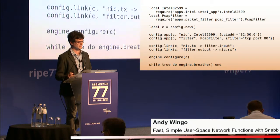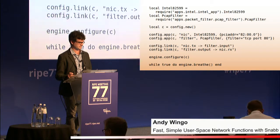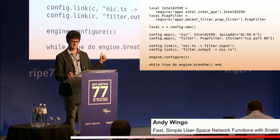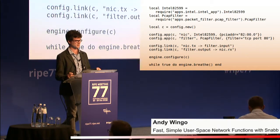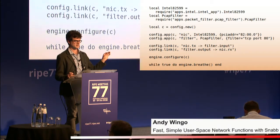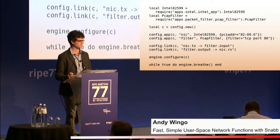We specify the NIC by PCI address, not by interface name, because this really is getting the kernel out of the way. If you did an strace on this process — which shows you the system calls a process makes — you would see nothing. It doesn't talk to the kernel at all, and that's part of how it keeps low latency, doesn't drop packets, and gets good throughput.